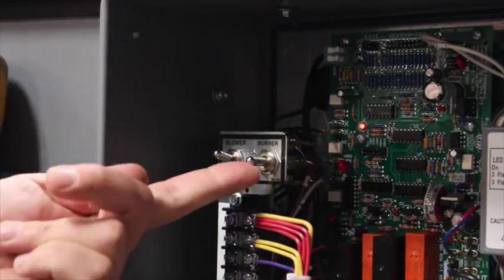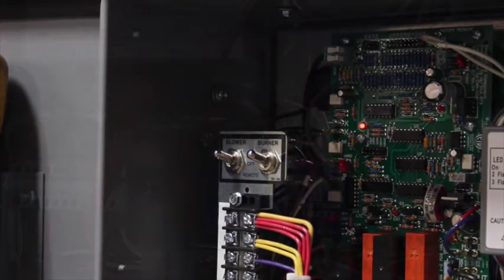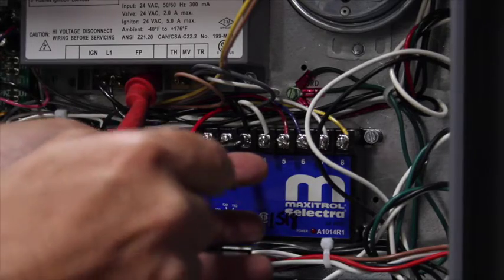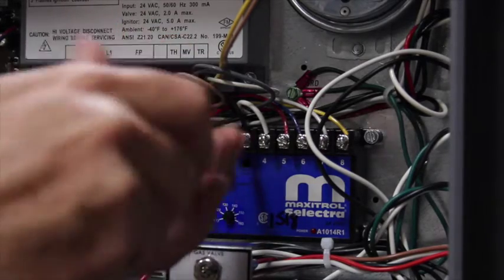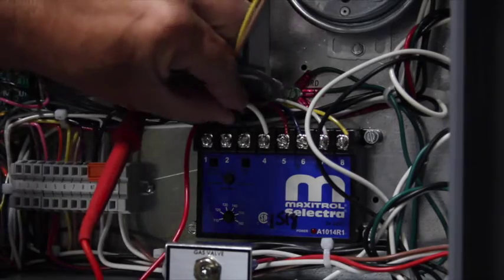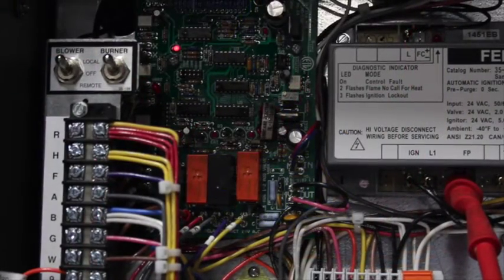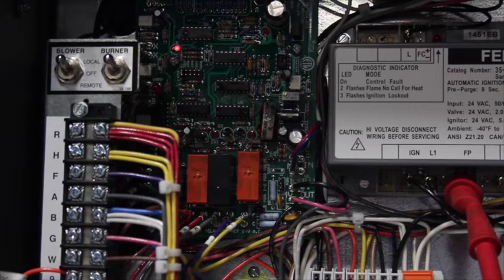Place the burner switch in local position. Once the burner fires, remove wire number three from the amplifier. Place the burner switch to local position. Once the burner fires, the X light will go off.